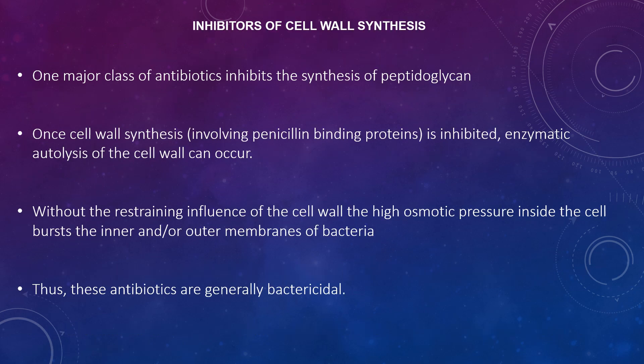One major class of antibiotics inhibits the synthesis of peptidoglycan cell wall. Cell wall synthesis involving penicillin-binding proteins is inhibited, and enzymatic autolysis of the cell wall can occur. Without the stabilizing influence of the cell wall, the high osmotic pressure inside the cell bursts the inner and outer membranes of the bacteria. Therefore these antibiotics are generally bactericidal.